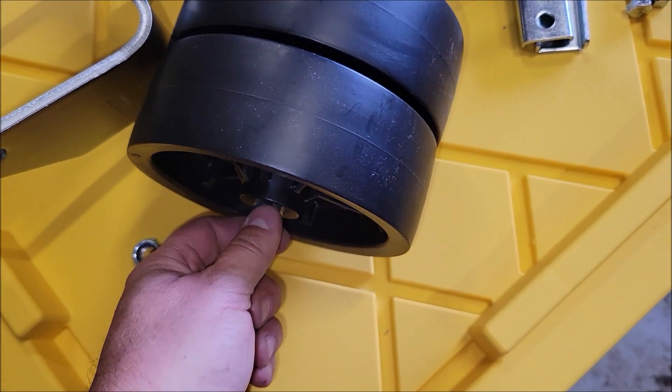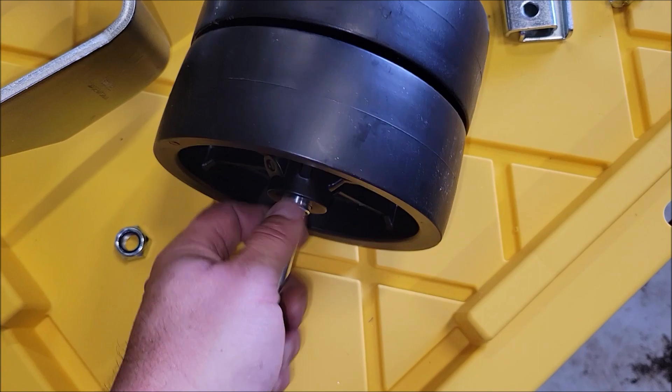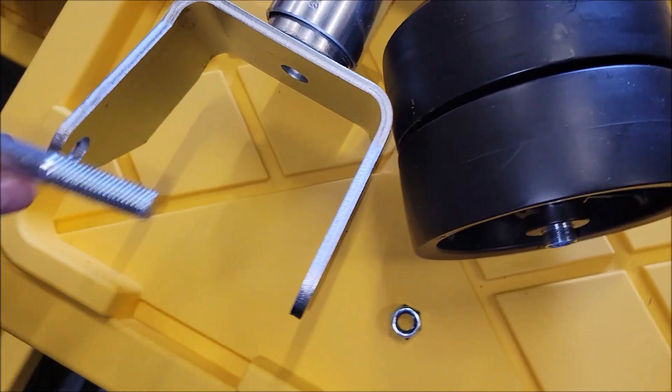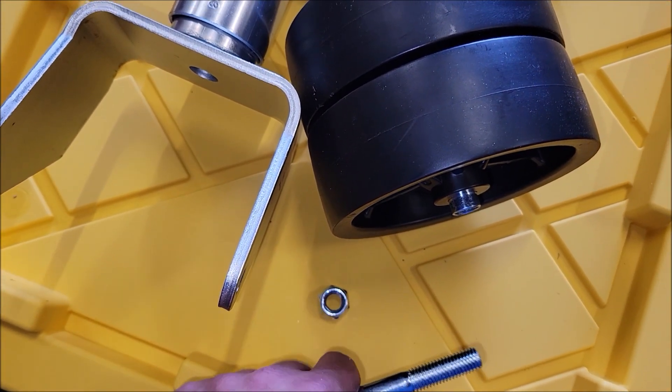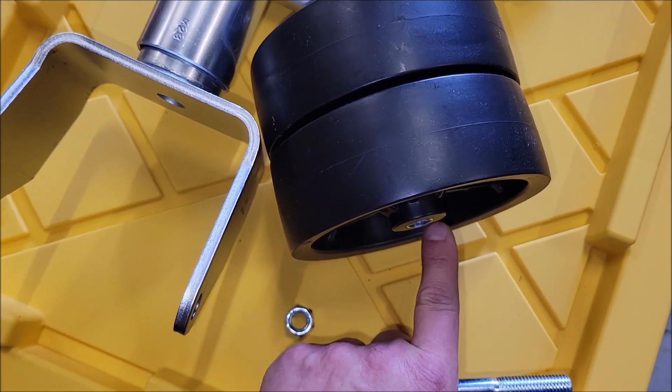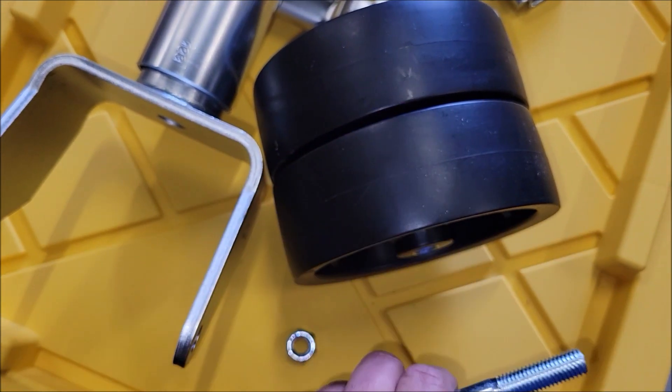Then this bolt will come out and it's going to go through here to hold everything on, and then you're going to have this nut on the other end. So this bushing bar is supposed to go through both of these wheels when you put it on.